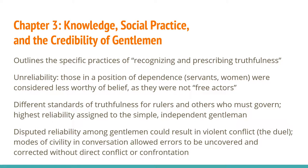Chapter 3 outlines the specific practices of recognizing and prescribing truthfulness. It explores the concept of unreliability and how less privileged classes and women were figured as unreliable. Here we also have a discussion of the practices by which reliability was disputed among gentlemen. If you're interested in a detailed discussion of the mechanics of duels, this is the chapter to read. The duel was almost always framed as an accusation that a gentleman was a liar, and the public charge of untruthfulness was often settled by combat. Shapin argues that the modes and practices of civility were meant to prevent violence by allowing errors to be uncovered and corrected without direct conflict or confrontation — you did not want to directly accuse your colleague of being wrong or falsifying data because you might find yourself on the dueling ground.